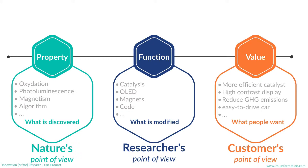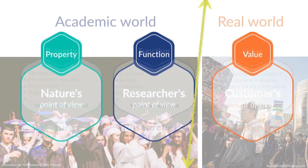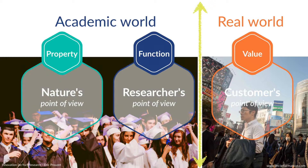The value is what people want. For example, they don't want a catalyst — they want a more efficient catalyst. They don't want a photoluminescent molecule or even organic LEDs; they want a better, high-contrast display on their cell phone. As researchers, our work is focused on the first two items: properties and functions.